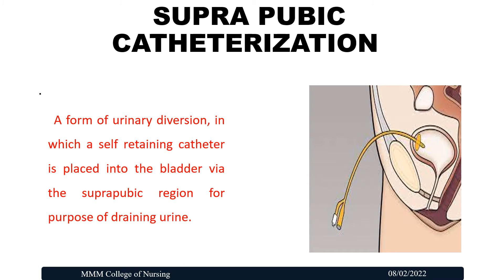To begin with, let's see what is suprapubic catheterization. It is a form of urinary diversion in which a self-retaining catheter is placed into the bladder via the suprapubic region for the purpose of draining the urine.